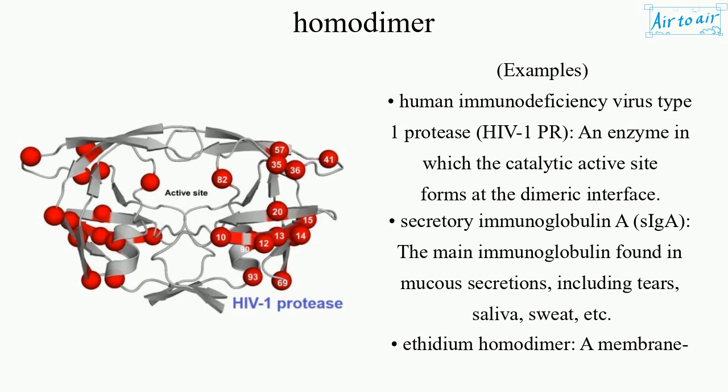Secretory Immunoglobulin A (SIgA), the main immunoglobulin found in mucous secretions, including tears, saliva, sweat, etc.